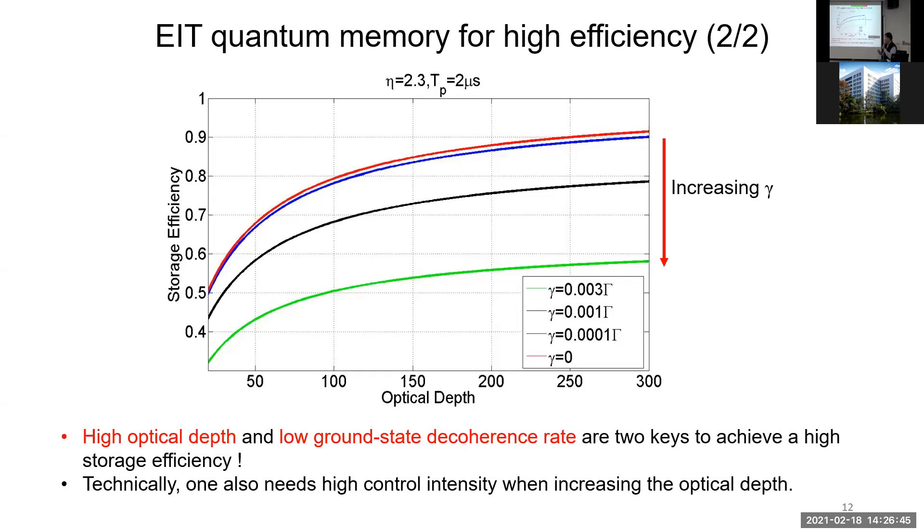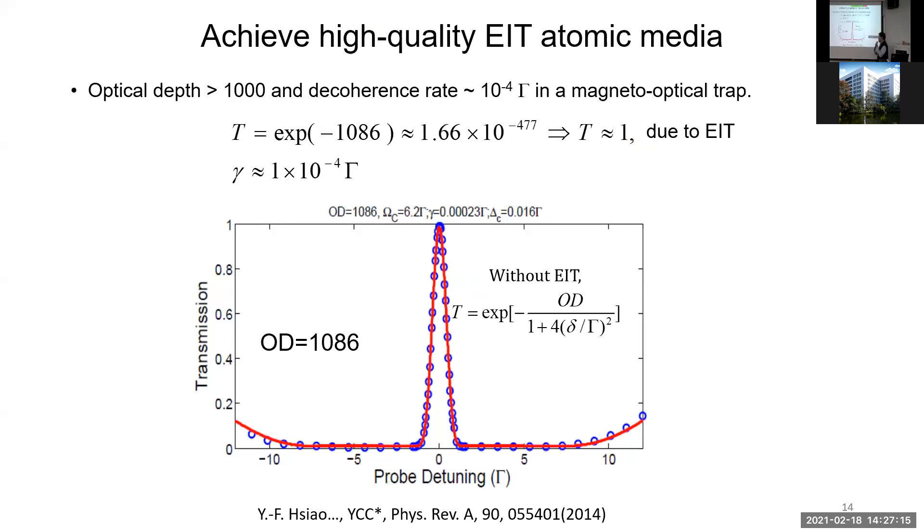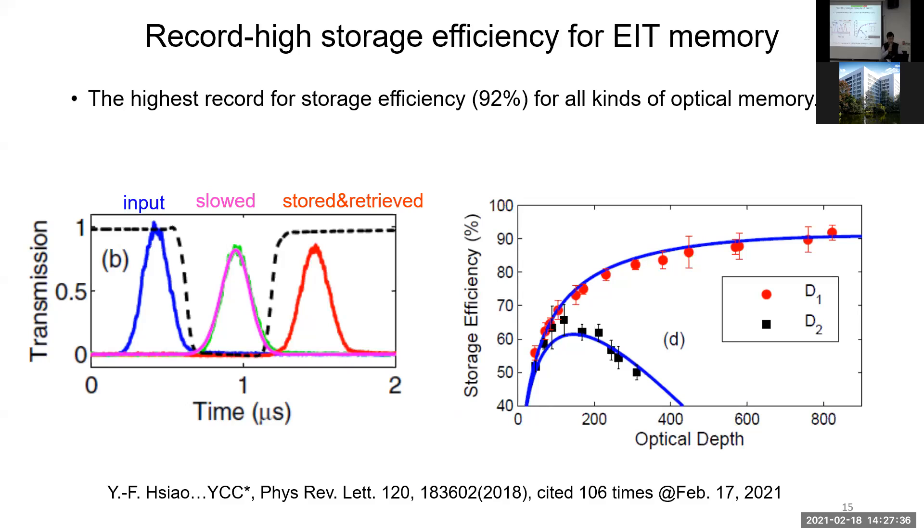Experimentally, you also need to have a high control intensity when you increase the optical depth. You can see the efficiency goes higher for higher optical depth, although the slope becomes quite slow. Here is the typical setup to implement an experiment. We use an elongated magneto-optical trap, which has a sample length on the order of 1.4 centimeters. For many years we have pushed our system to get very high optical depth and very small decoherence rate. We can reach almost 100, and you can see it's a very nice EIT spectrum.